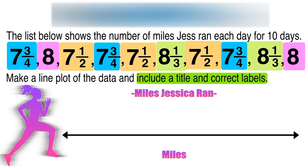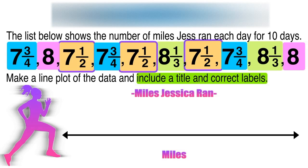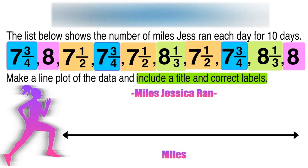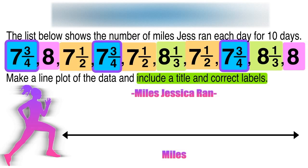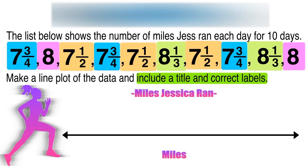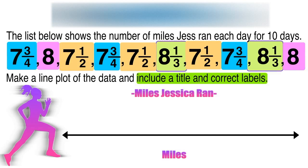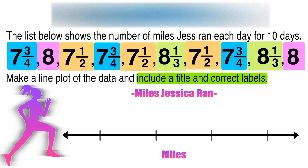Starting with the smallest — seven and one-half — then seven and three-quarters, then eight, and then the largest, eight and one-third. Now we have to represent each of those four values on the line plot in order from smallest to largest.